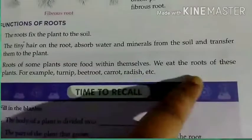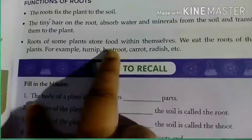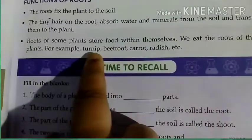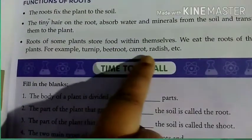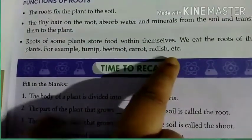We eat the roots of these plants. Examples are: turnip, beetroot, carrot, and radish. So some roots also serve as food for us.